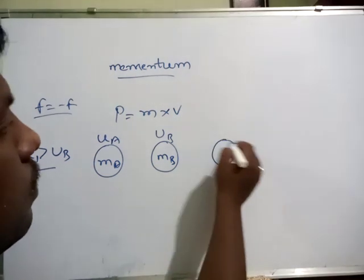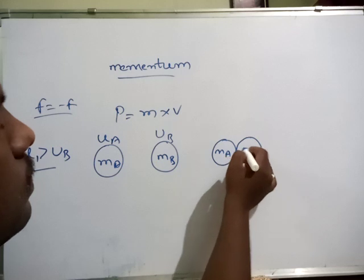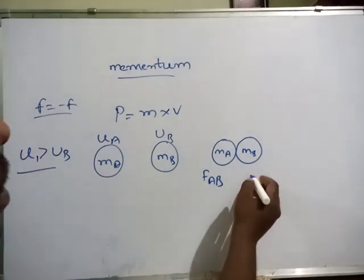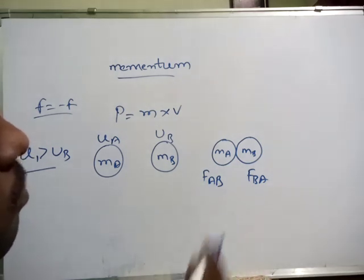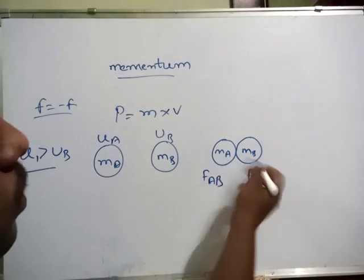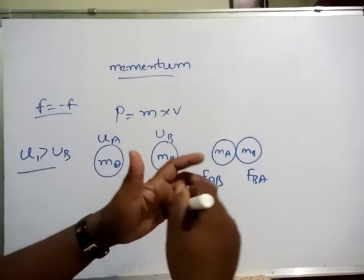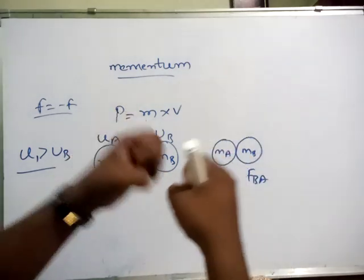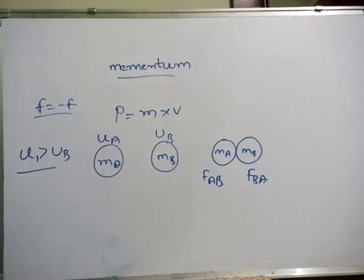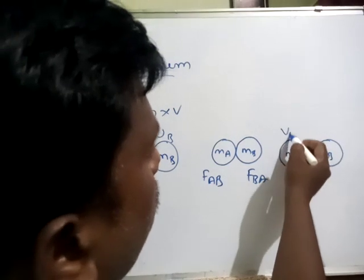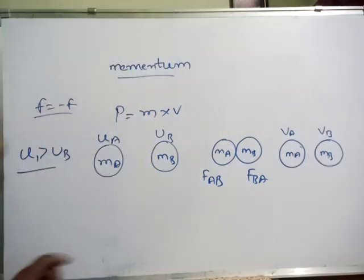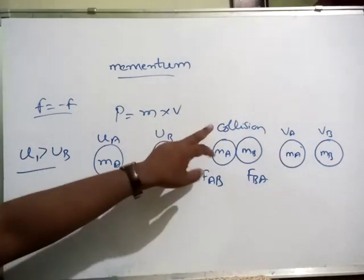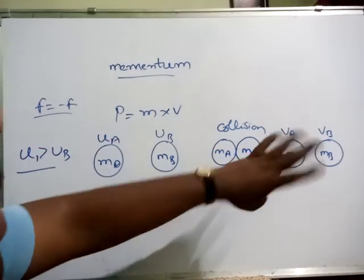If both collide with each other — the force on A due to B and the force on B due to A — both will be equal and opposite to each other during collision. After collision, both the bodies will be separated. Their velocities also will be changed to VA and VB. UA and UB are the initial velocities before collision; VA and VB are the velocities after collision.